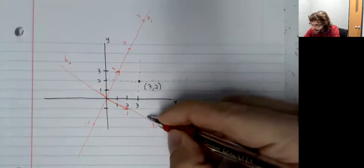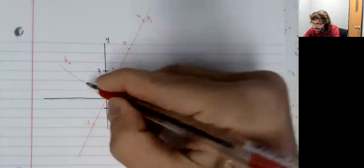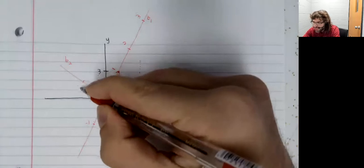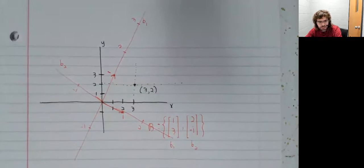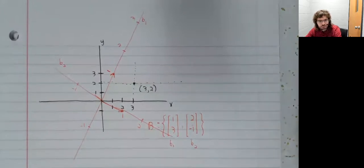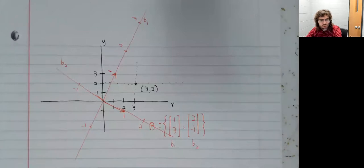And this vector b2 will give us one unit on the b2 axis. There's one, there's two, negative one, and so on. We can now use these axes to talk about points.